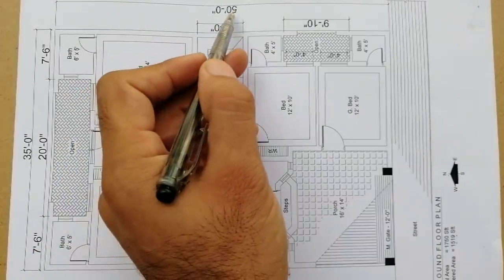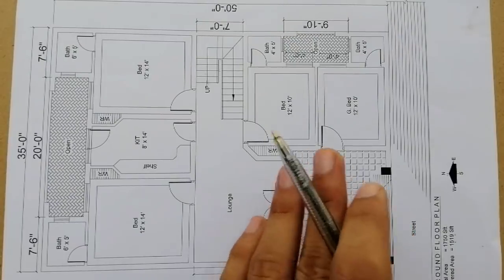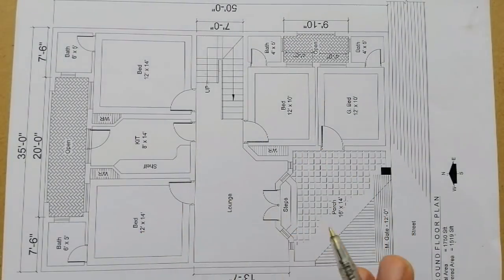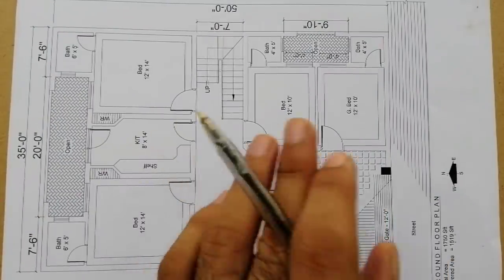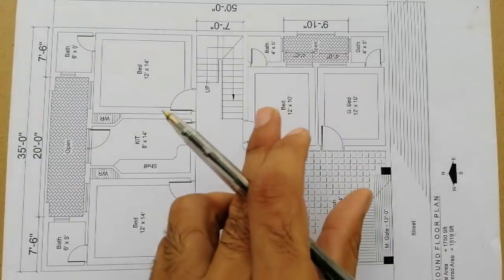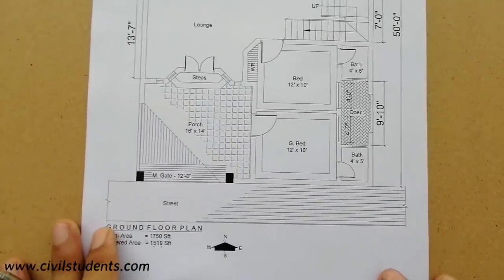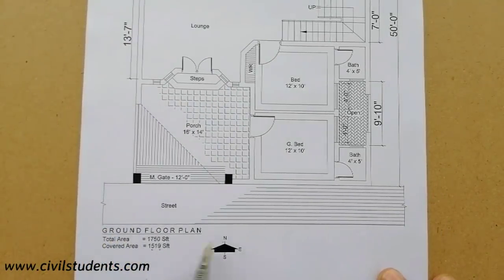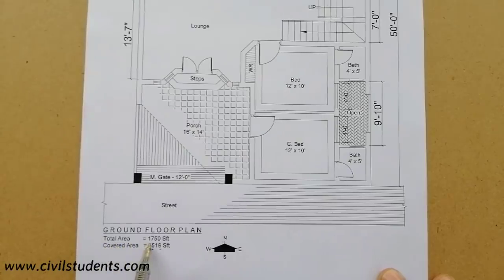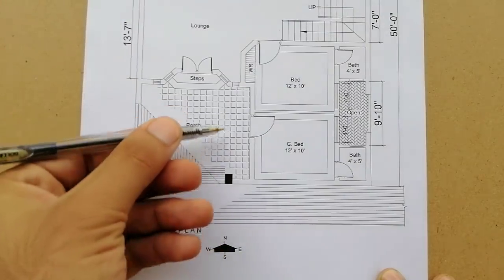This is a simple drawing with dimensions 50 feet by 35 feet, which I prepared for my client. Let's start a video to show something new and important. This is a small house — 50 by 35 feet — and this is the ground floor plan. The total area of this project is 1750 square feet, the covered area is 1519 square feet, and this building is located in the north direction.